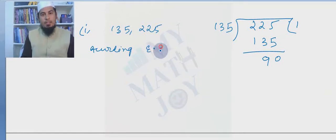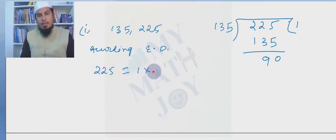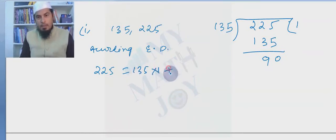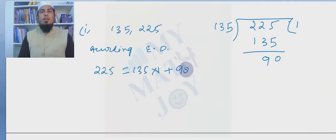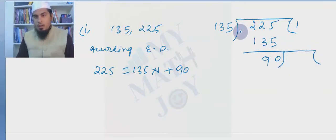According to Euclid's division lemma, we write: 225 = 135 × 1 + 90. We got a remainder, so HCF is not yet found. We continue the division — now we divide 135 by 90, so the previous remainder 90 becomes the new divisor and 135 becomes the dividend.